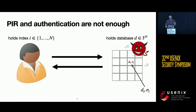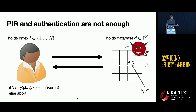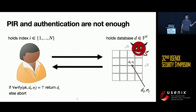The first solution we might think about is to combine a classic PIR protocol with a classic authentication mechanism such as signatures. We would attach to each record the corresponding signature, and Alice would retrieve the record and the signature attached to it and verify the signature. If the signature verifies, Alice returns the record she wants; otherwise she aborts.